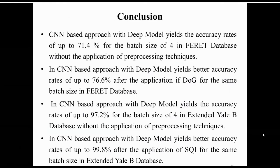In conclusion, the CNN-based deep model yielded an accuracy rate of 71.4% for a batch size of 4 on the FERET database without pre-processing. Applying the DoG pre-processing technique increased accuracy to 76.6%. For the Extended Yale database, without pre-processing the accuracy was 97.2%, and applying SQI pre-processing raised it to 99.8%. For all cases, the best accuracy was achieved with a batch size of 4. Thank you for listening, and I am happy to answer any questions.